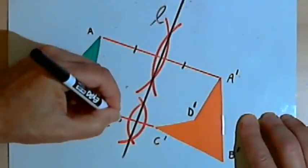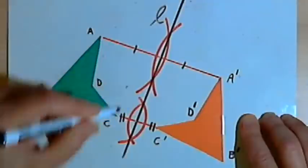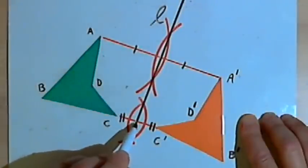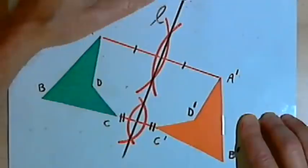And I bisected C and C prime, I got another point where they were bisected. Connecting those two points, I then have the line of reflection.